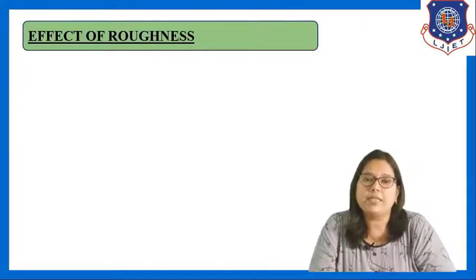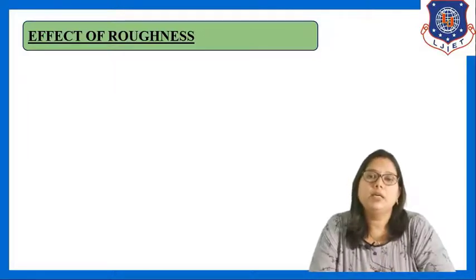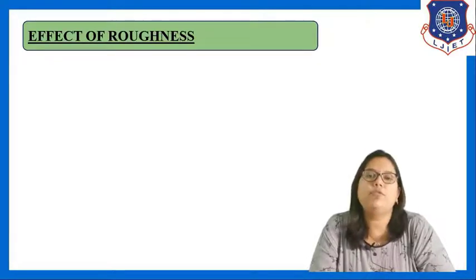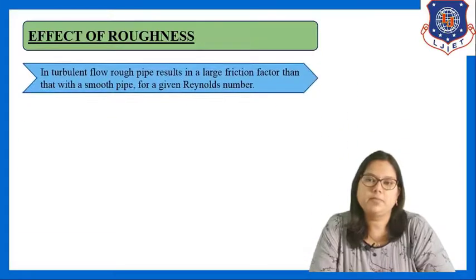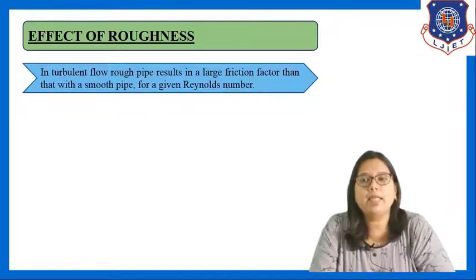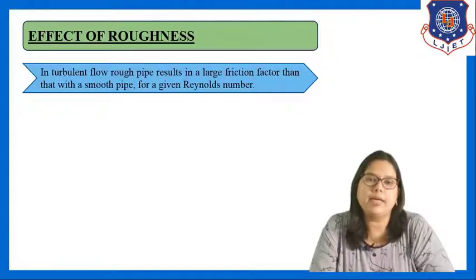The effect of roughness is very important — how the pipe surface is, whether smooth or rough. In turbulent flow through a pipe, a rough pipe results in a larger friction factor than a smooth pipe for a given Reynolds number.